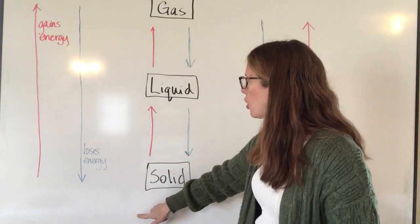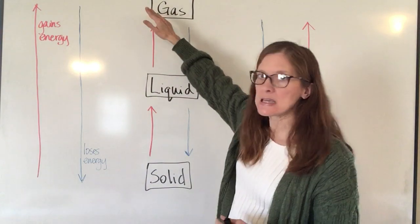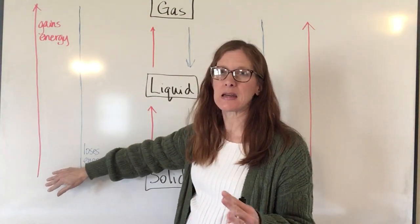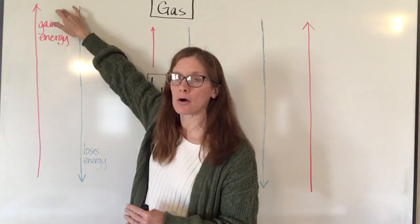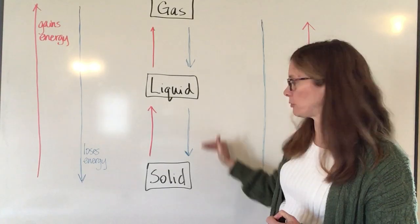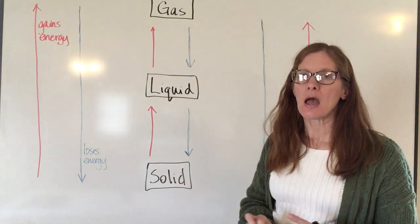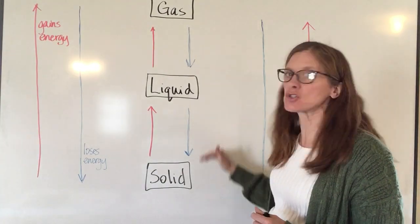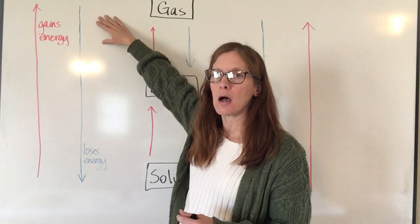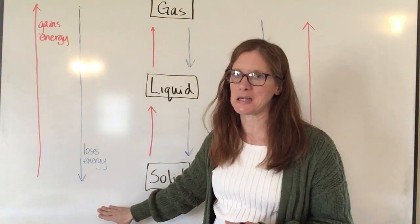So any time that I'm going to go up on my diagram I'm going to be gaining energy, and I've indicated that by a red arrow showing that I'm going to gain energy. Any time I go from a gas to a liquid or from a liquid to a solid, I'm going to be taking energy away. The particles are not going to be moving as quickly once they make that phase change, and so those are all going to be indicated by a blue arrow where I'm going to be losing energy.